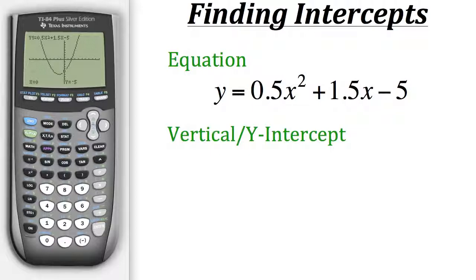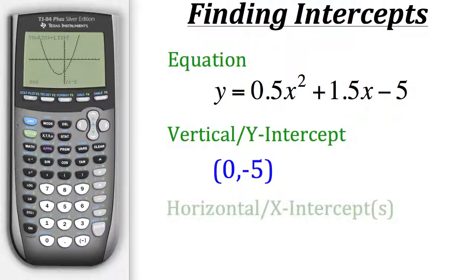So now we know our vertical intercept. It's at the point 0 negative 5. Now let's move on to find our horizontal intercepts.